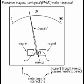An increase in measured current will drive the needle to point further to the right, and a decrease will cause the needle to drop back towards its resting point on the left.